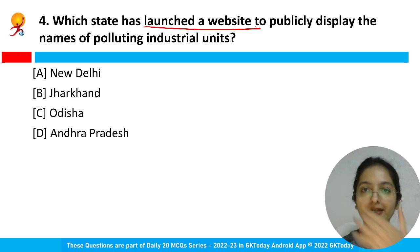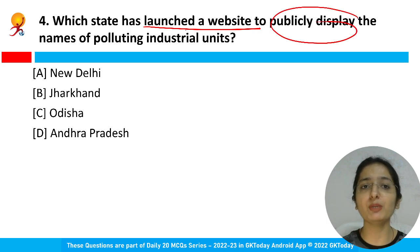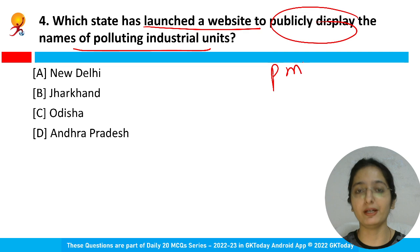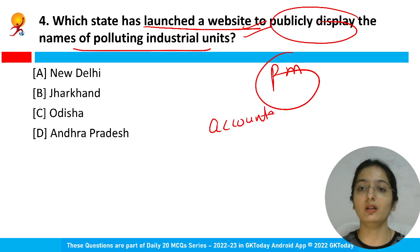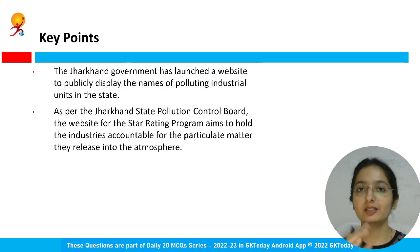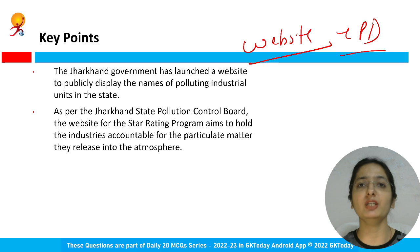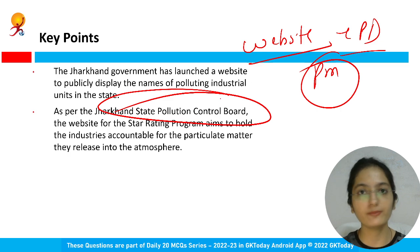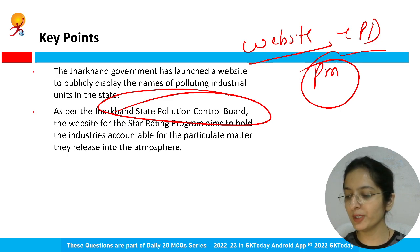Which state has launched a website to publicly display the names of polluting industrial units that are releasing particulate matter into the atmosphere? The answer is Jharkhand, option B. The government of Jharkhand has launched this website to hold accountable those industrial units releasing particulate matter, as per the Jharkhand State Pollution Control Board.